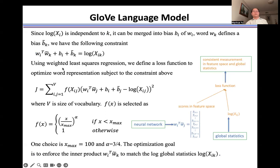Then we use weighted least squares regression to define the loss function to optimize the word representation subject to the constraint here. From this loss function, we see we have two terms here.